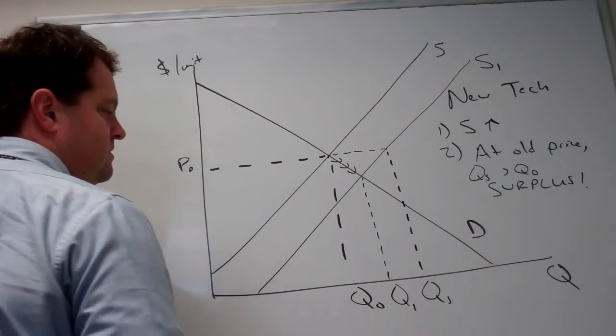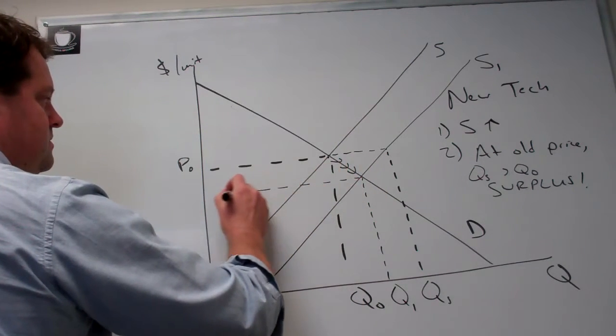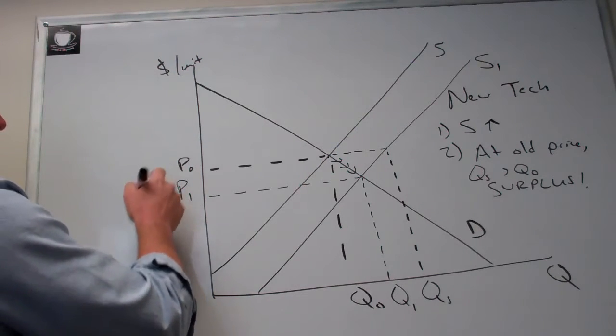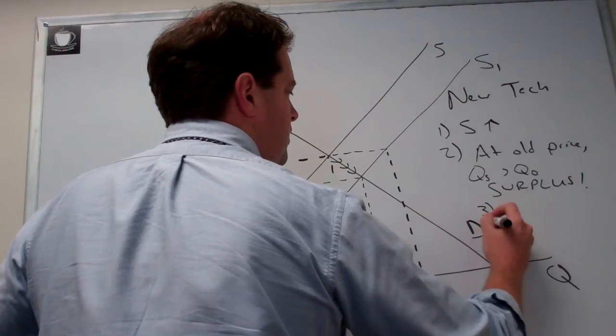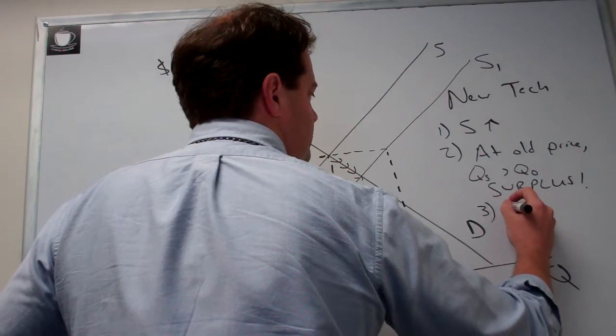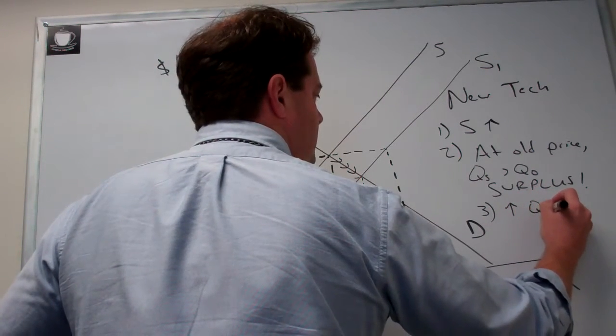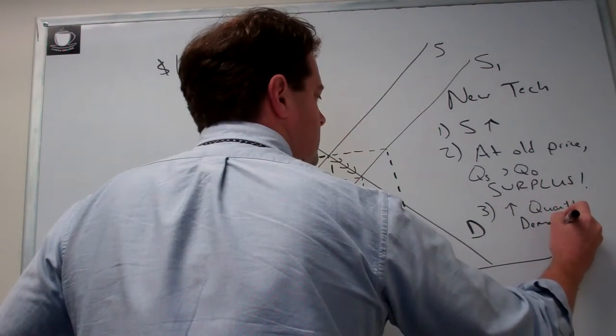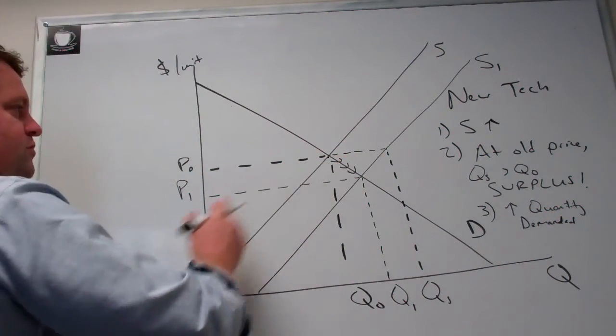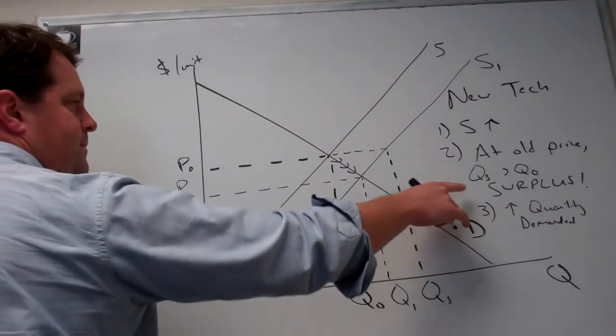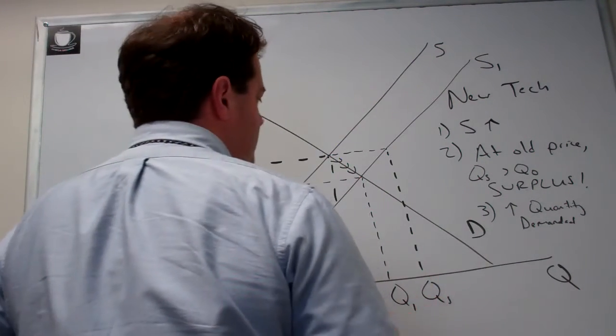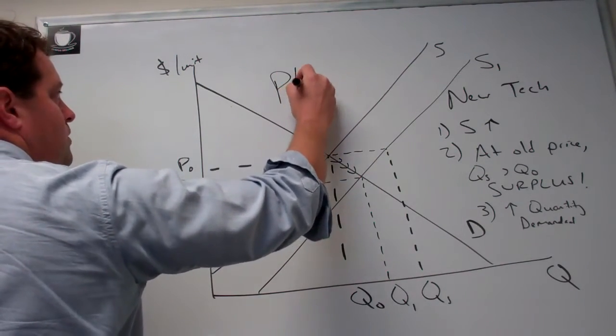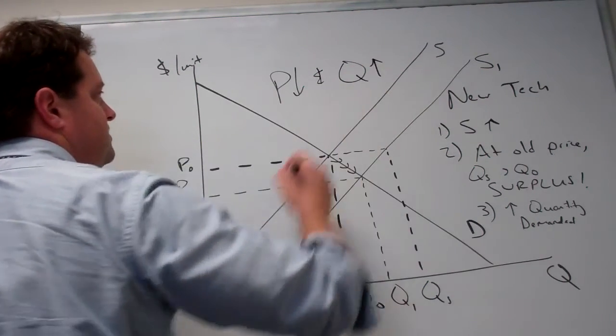From Q0 to Q1, a new price will be established that's lower than the original equilibrium. So our third step: there's an increase in the quantity demanded, that's that movement along the curve that happens once price starts to be bid down.